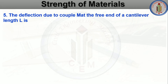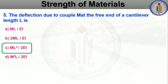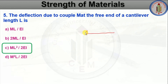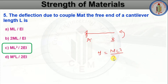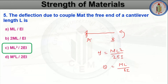The deflection due to couple M at the free end of a cantilever of length L is — ML/EI, 2ML/EI, or ML²/2EI. The answer is ML²/2EI. For a cantilever beam A to B with couple M at the free end, deflection = ML²/2EI and slope θ = ML/EI. You have to remember this carefully — this is different from UDL load or point load at the free end.